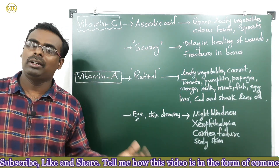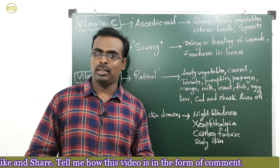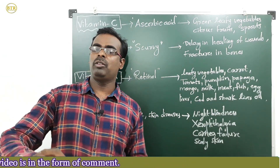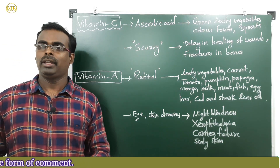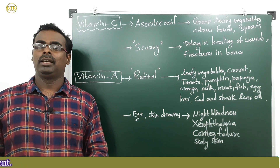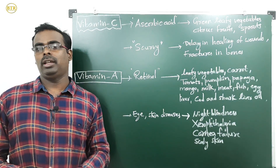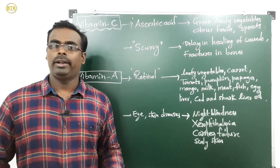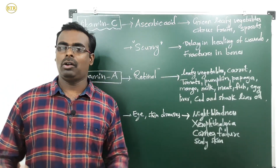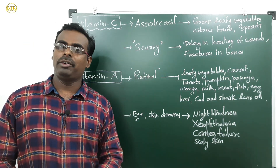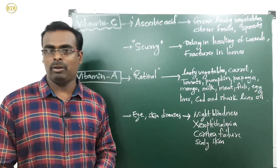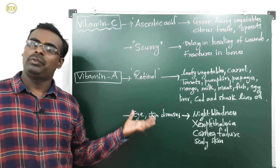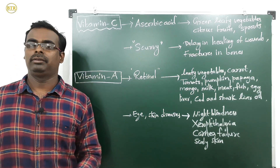Deficiency of vitamin A causes eye and skin diseases. These include night blindness — inability to see at night — xerophthalmia (dry eyes), where lacrimal glands cannot produce tears, leading to blindness or permanent vision loss; cornea failure; and scaly skin.